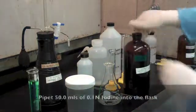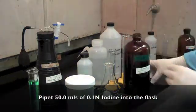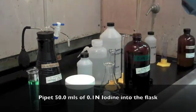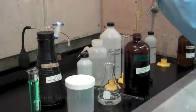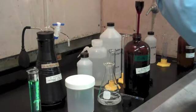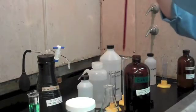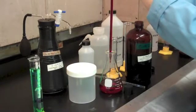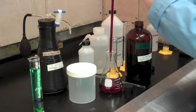Then we're going to pipette in 50 milliliters of 0.1 normal iodine. And as you can see, the solution will turn dark brown.